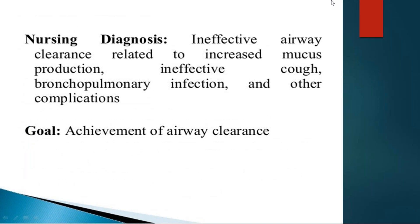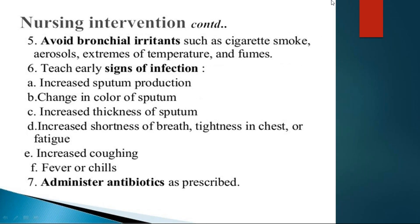Nursing considerations for ineffective airway clearance include increased mucus production, ineffective cough, bronchopulmonary infections, and other complications. The main goal is to achieve airway clearance. Patients should avoid bronchial irritants like cigarette smoke, fumes, aerosols, and extreme temperatures. Nurses should alert patients to the early signs of infection, which include fever, chills, increased coughing, increased shortness of breath, chest tightness or fatigue, increased sputum production, change in sputum color, and increased thickness of sputum.